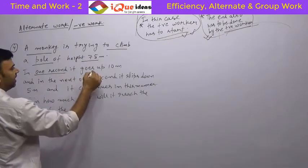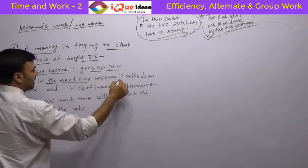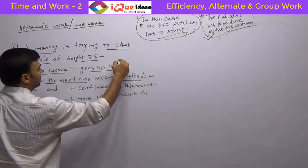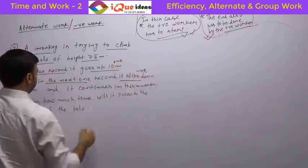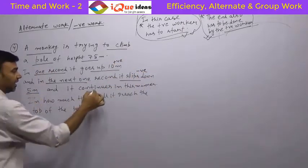In one second, it goes up 10 meters and in the next one second, it slips down. So this is positive work and this is negative work. It slips down 5 meters and it continues in this manner.